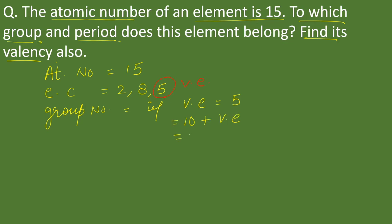So here now we have to add 10 plus valence electrons which are 5. 10 plus 5, that is equal to 15. So this element belongs to group 15, which is the nitrogen family.